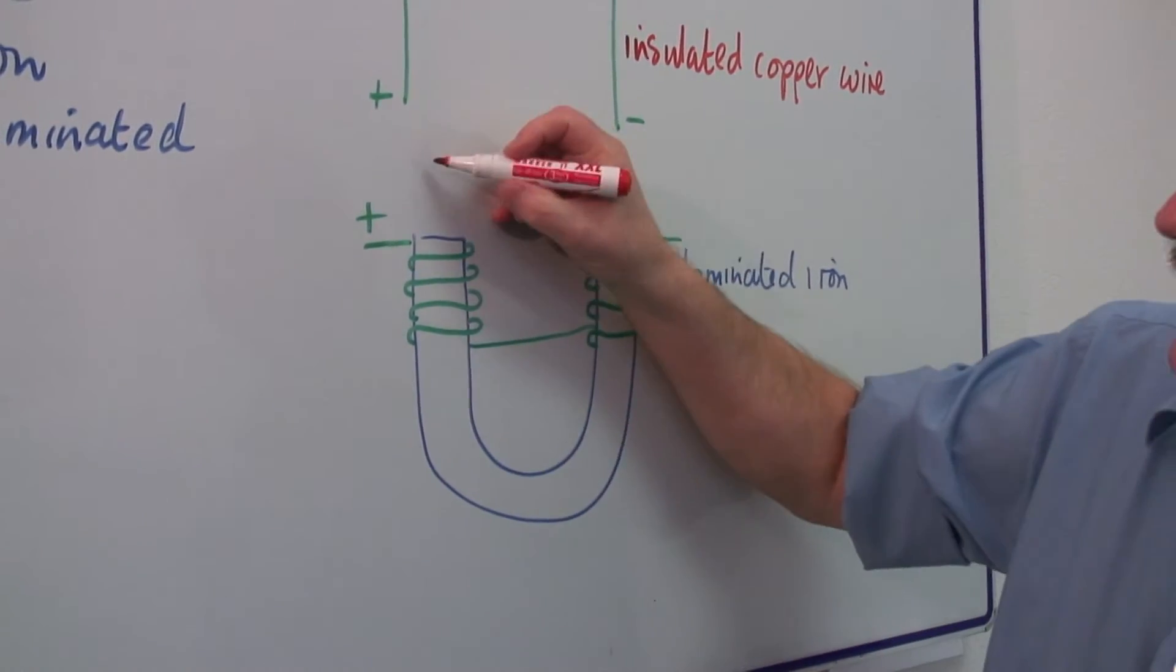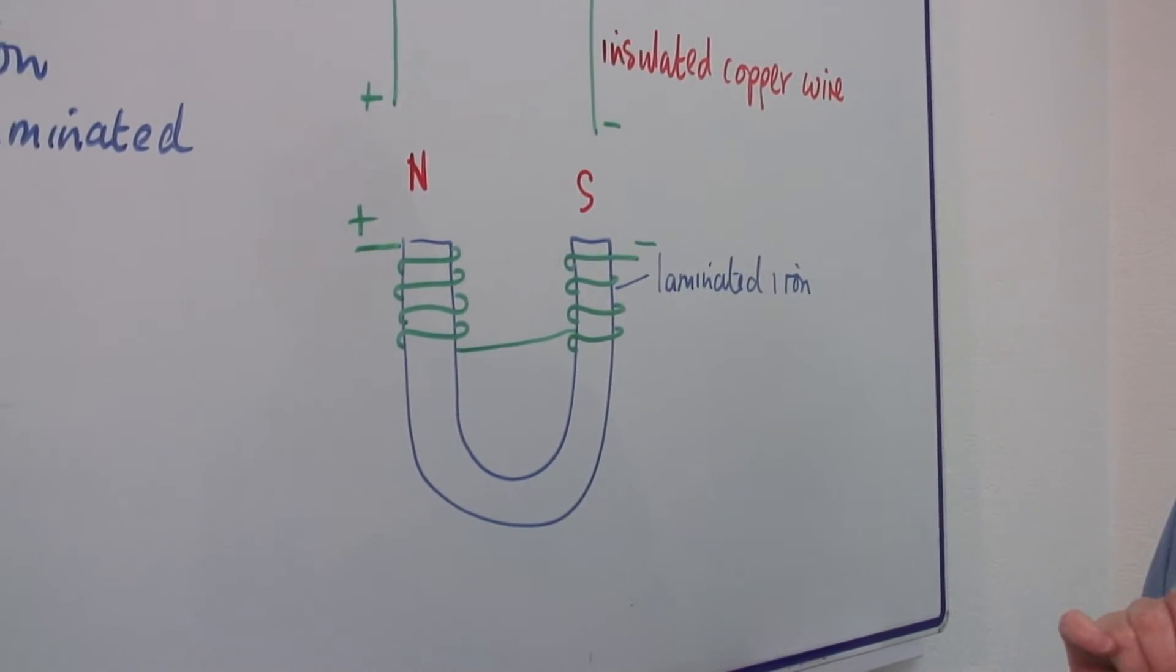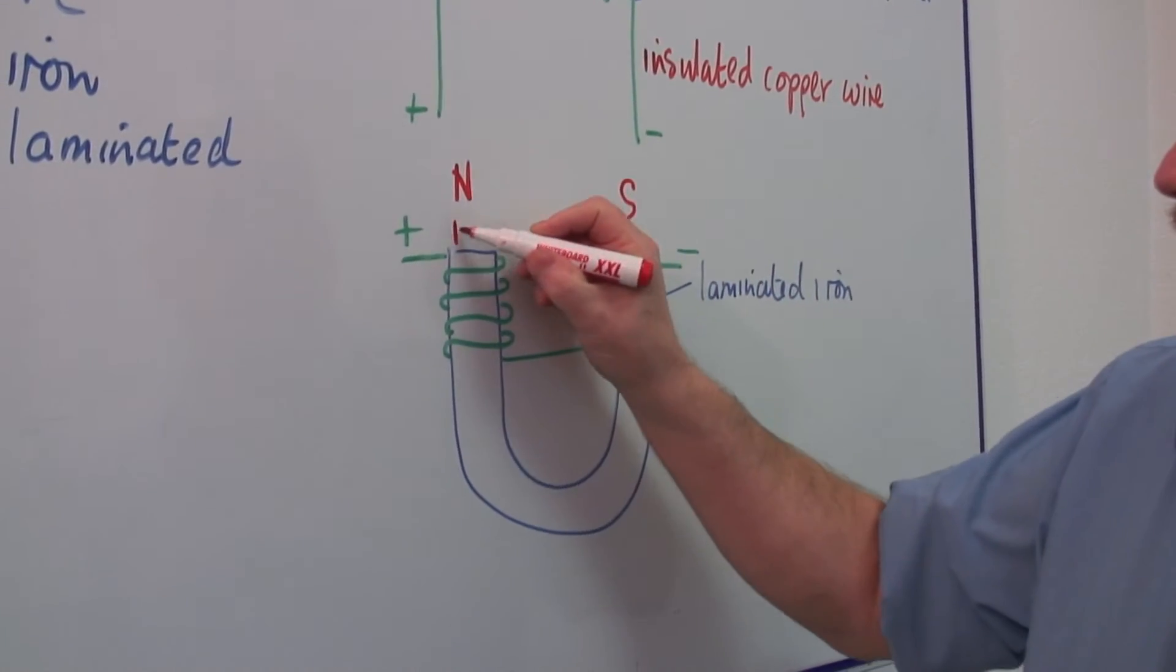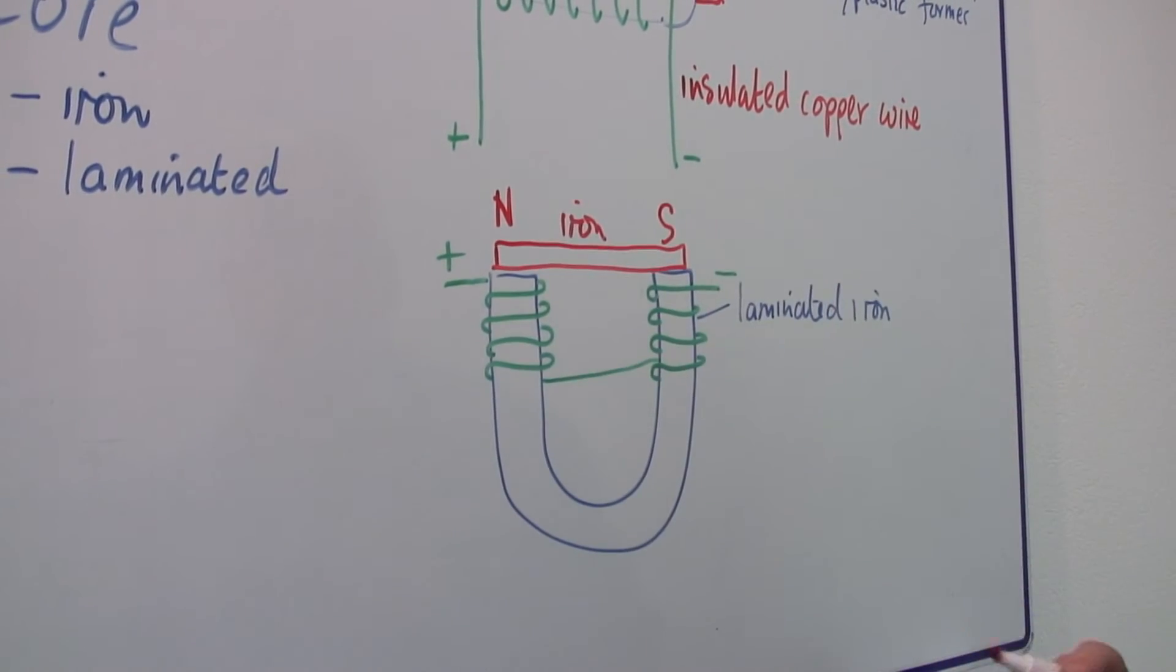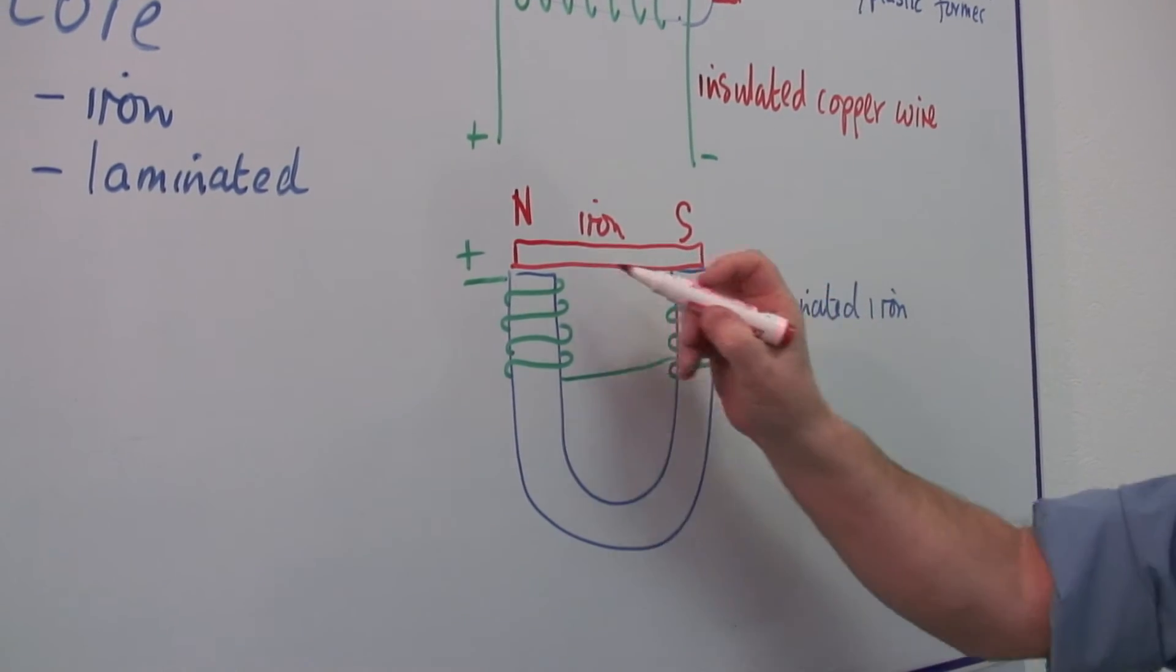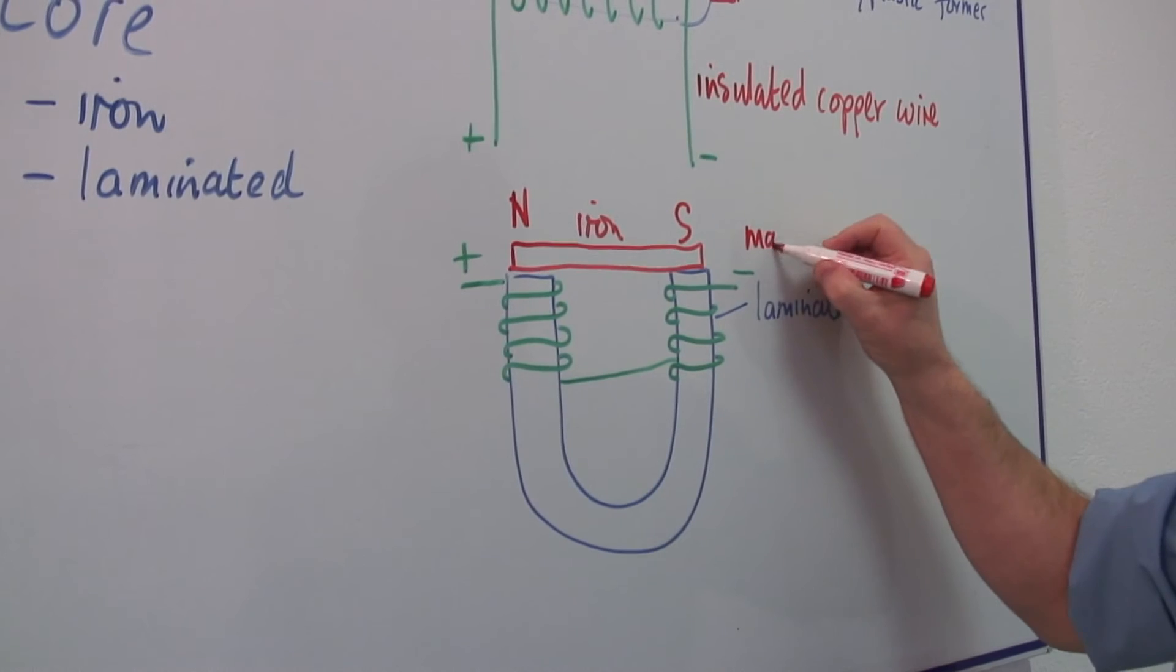And this end will be a north pole, and this end a south pole. That means that if you put a piece of metal, iron, across the top, you'll get a very strong attraction between that iron and this coil. You'll get what's called a magnetic circuit.